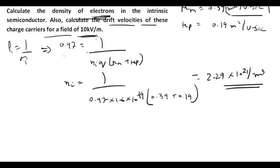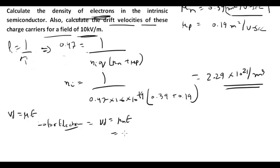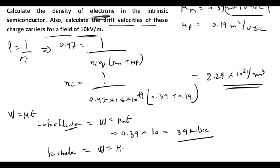To find the drift velocity, we use Vd = μ · E. For electrons: Vd = μn · E = 0.39 × 10 = 3.9 km/s. For holes: Vd = μp · E = 0.19 × 10 = 1.9 km/s. This is how we calculate drift velocity for electrons and holes.